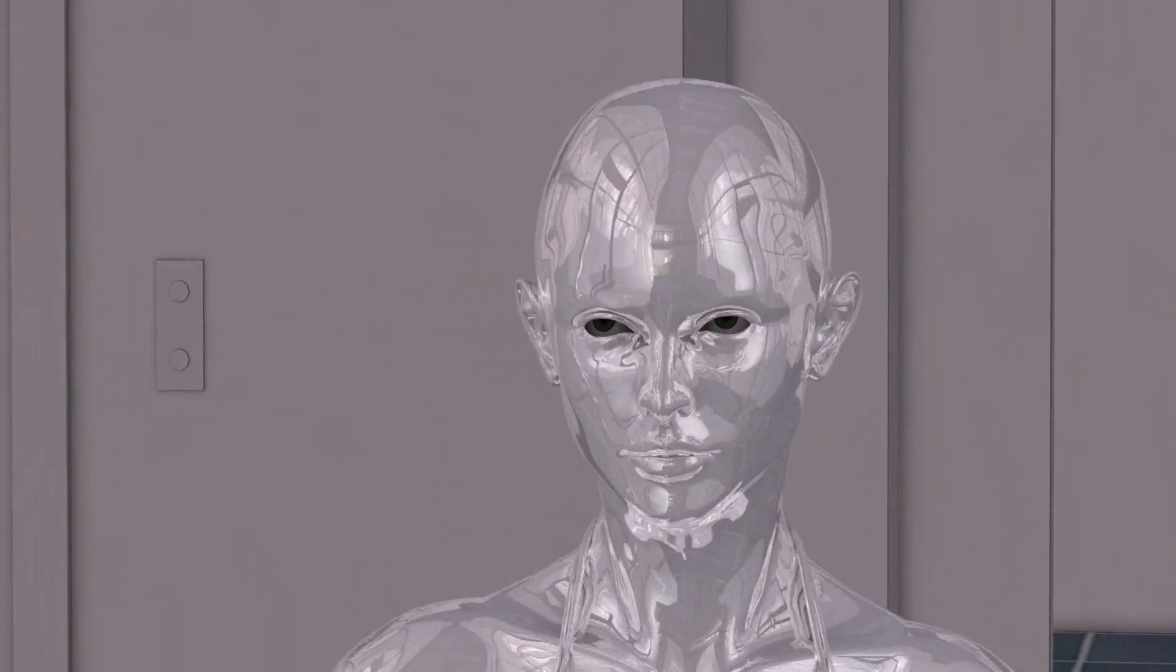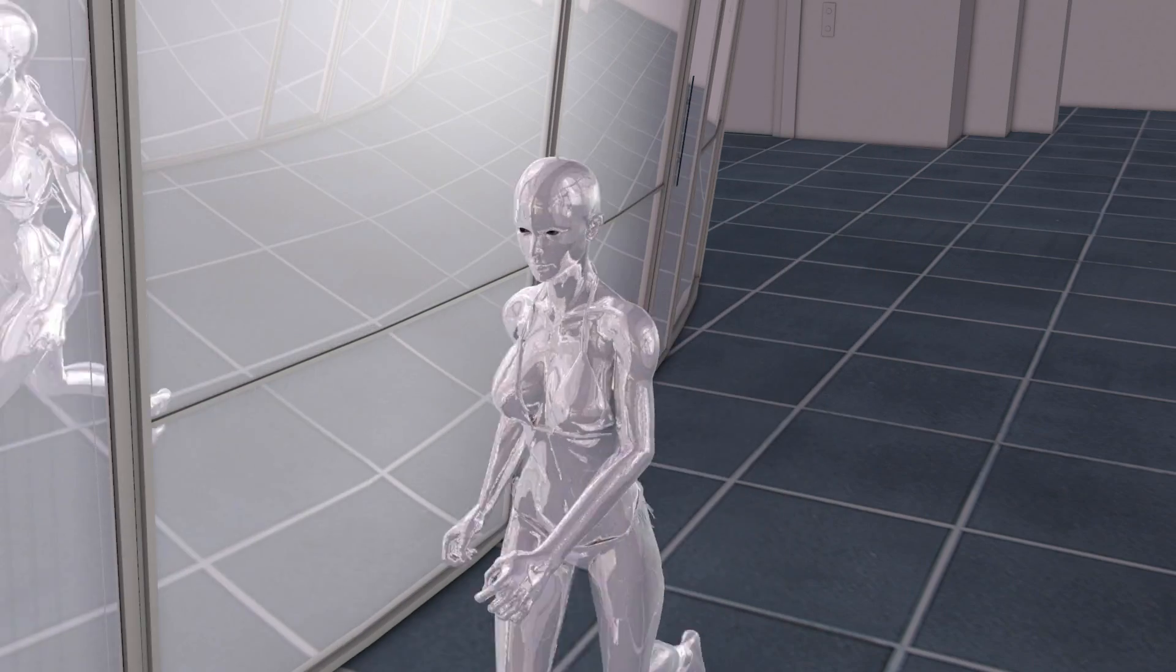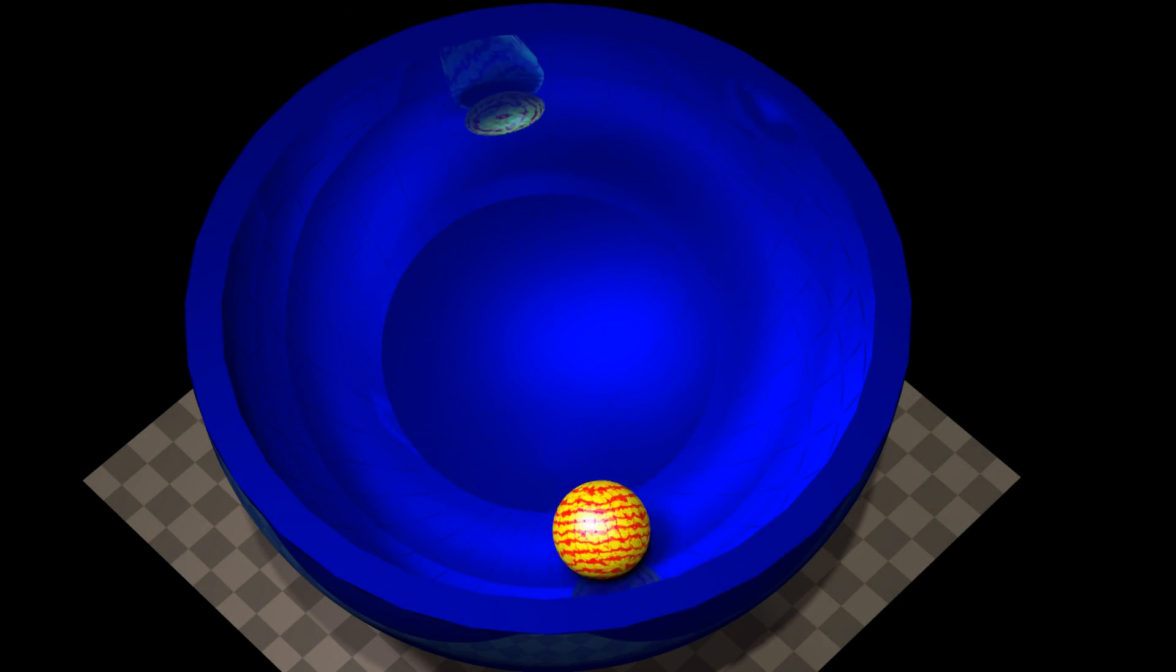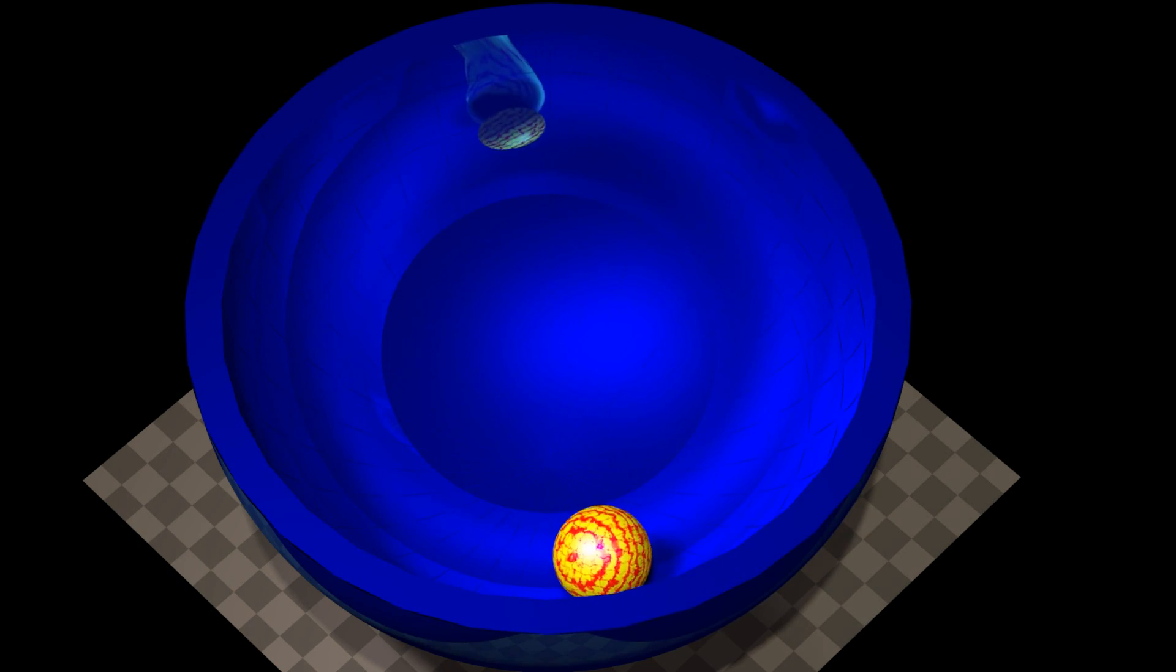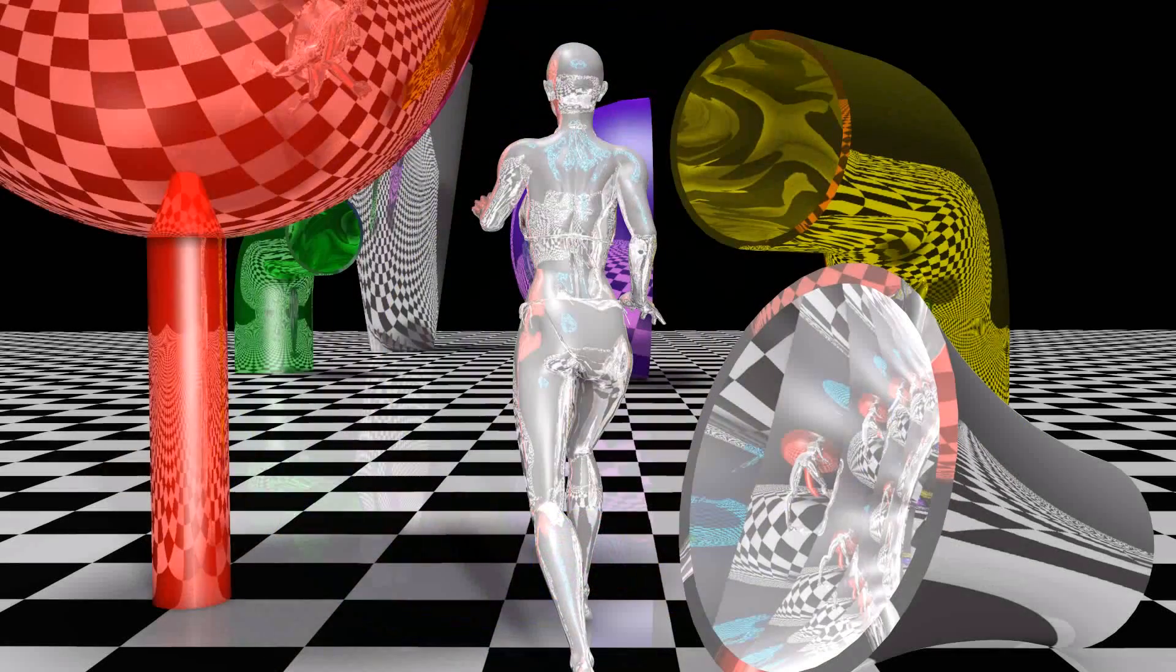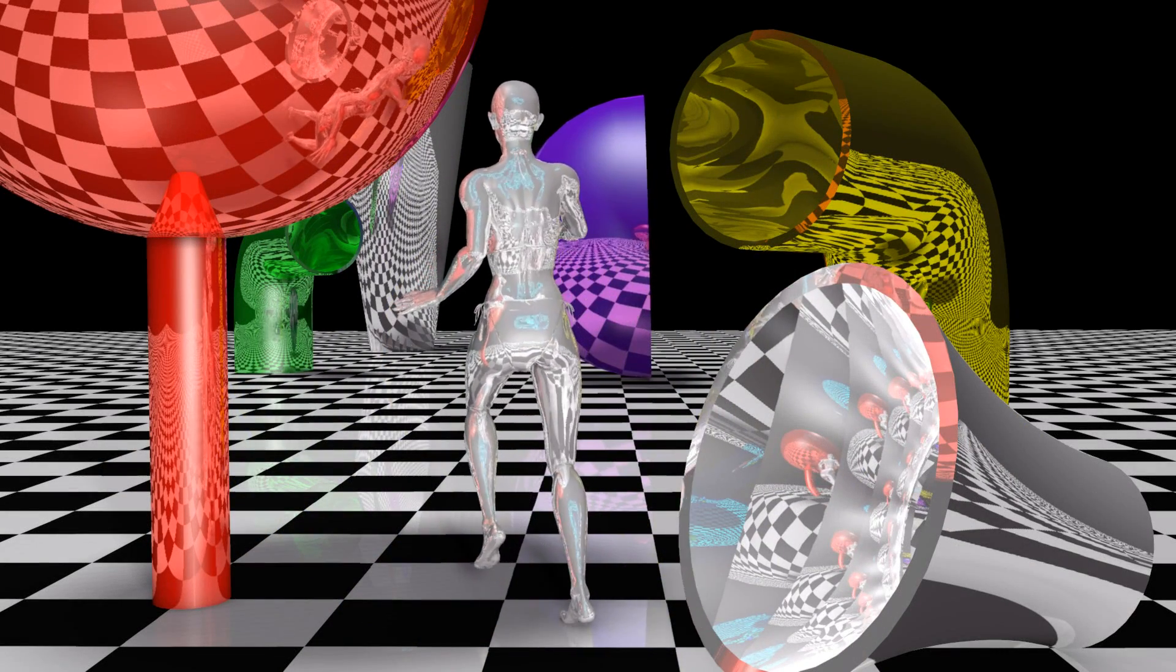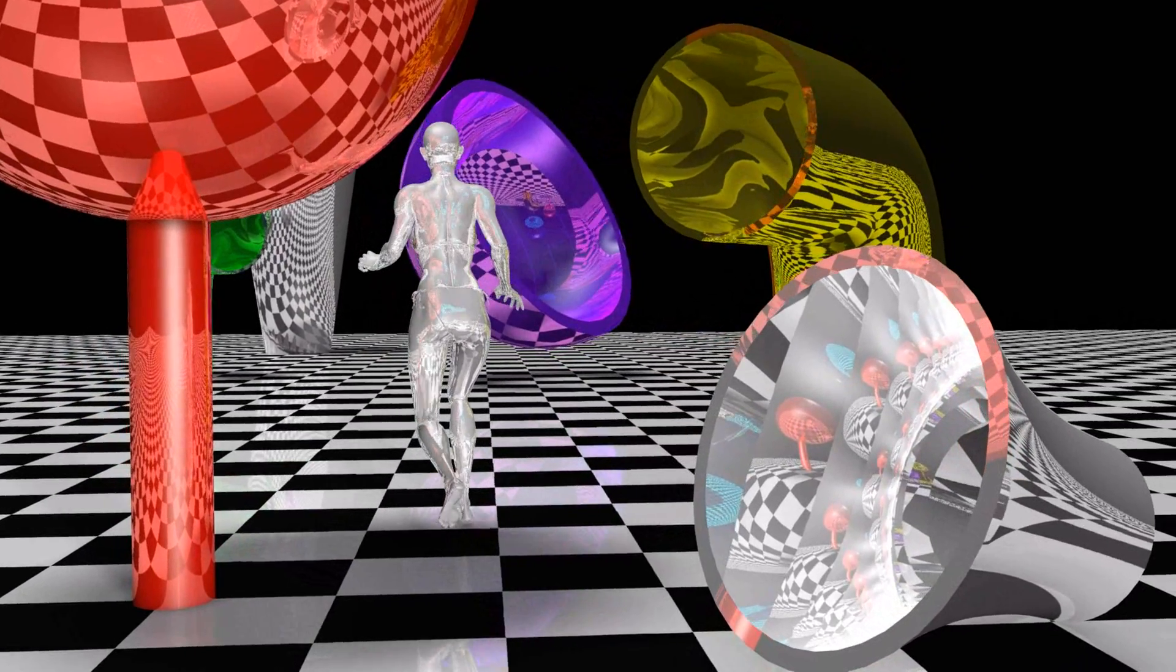But then, why don't all objects look like mirrors? An object does not necessarily have to be flat to be a mirror. Nor does an object have to reflect all the visible colors of light to be a mirror. Red mirrors reflect red light, yellow mirrors reflect yellow light, and violet mirrors reflect violet light.